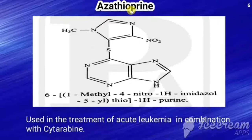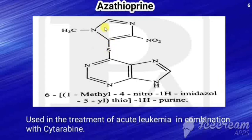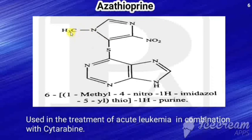The next drug is azathioprine. Its structure contains a purine nucleus with sulfur at the sixth position. That sulfur is attached to an additional imidazole heterocyclic ring. The imidazole ring has a methyl group at position 1, a nitro (NO2) group at position 4, and position 5 of the imidazole is connected to the sulfur, which is attached at the sixth position of purine. That is the structure of azathioprine.